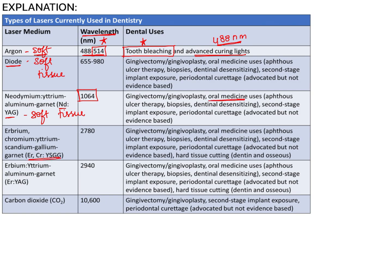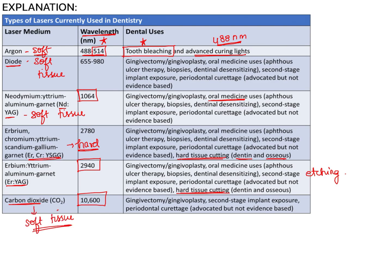Erbium chromium YSGG — where YSGG stands for Yttrium Scandium Gallium Garnet — is a hard tissue laser used for cutting both dentin and osseous structures. Erbium YAG laser has a wavelength of 2940 nm and is used for hard tissue cutting, caries removal, and tooth etching. Carbon dioxide laser has the highest wavelength at 10,600 nm; it is a soft tissue laser but has recently been approved for hard tissue procedures as well.